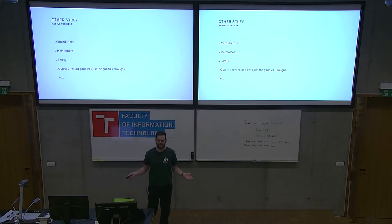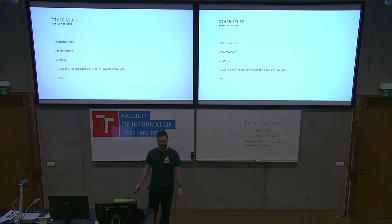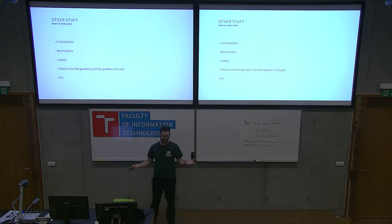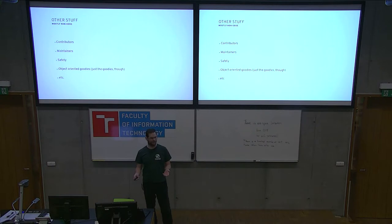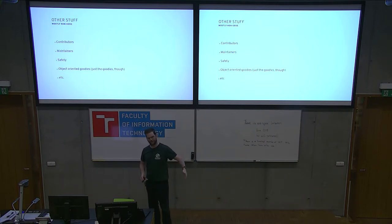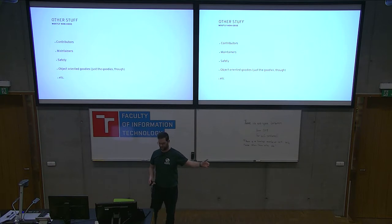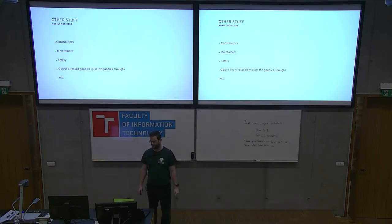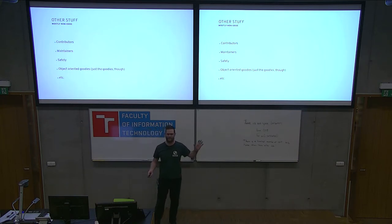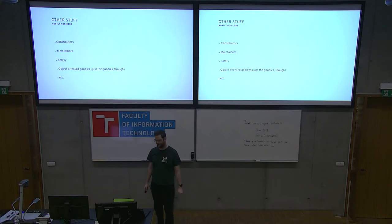Everyone wants more contributors and more maintainers, ideally. We want more safety because LibVirt is a project used everywhere — it maintains virtual machines and does migrations. So things should not go wrong too much. And we want to use some object-oriented features; we have an object implementation like most bigger C projects do.